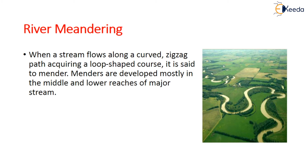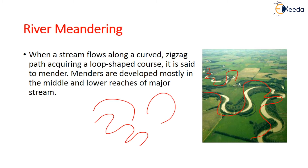River meandering: when a stream flows along a curved or zigzag path, acquiring a loop shape, that loop is called a meander. Each loop shape is one meander. Meanders are generally developed in the middle and lower reaches of a major stream.